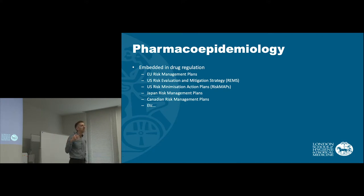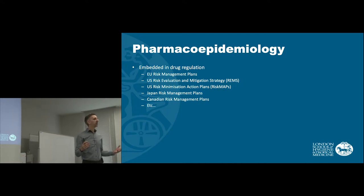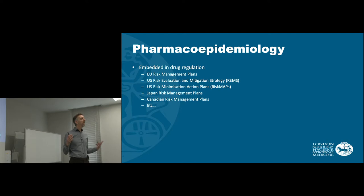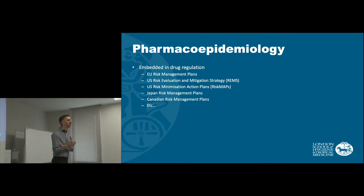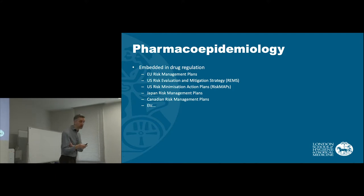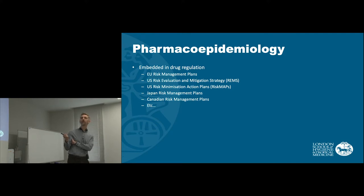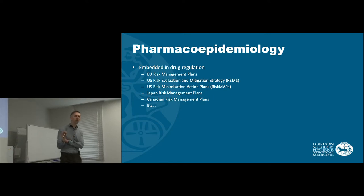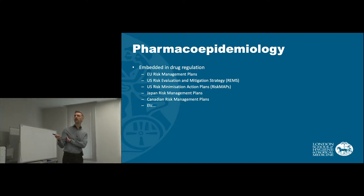Pharmacoepidemiology has become a big part of what's expected in drug regulation throughout the world. In most regions of the world there is now a big expectation that we will do some kind of formal risk management planning. This was originally led largely by countries in the European Union, who developed a process called risk management plans, with a slightly different process in the United States called the risk evaluation and mitigation strategy.